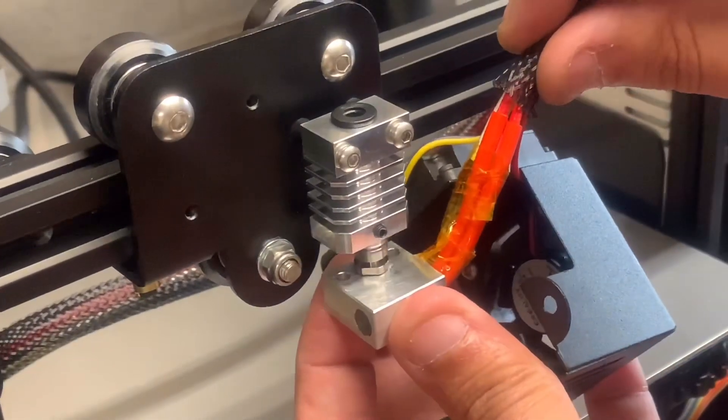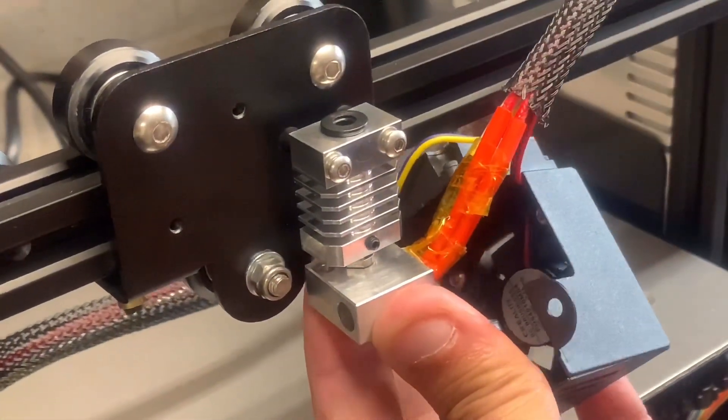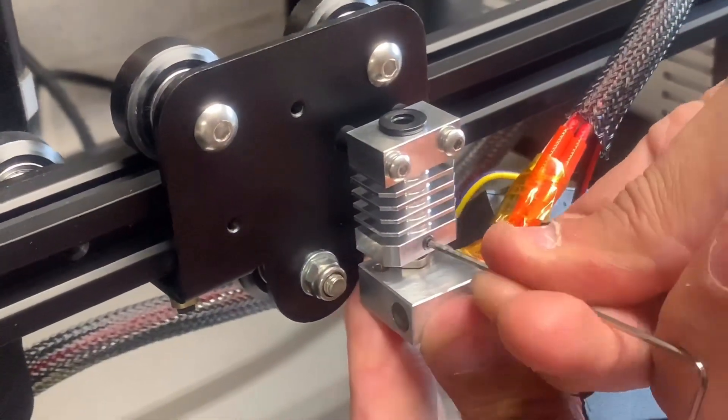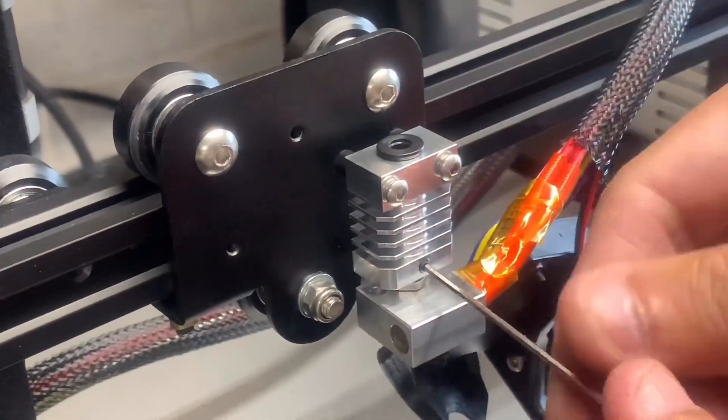Okay, so what we're doing is grabbing the bottom hot end with the fan and just stick it underneath and screw it in tightly with the grub screw and allen key.